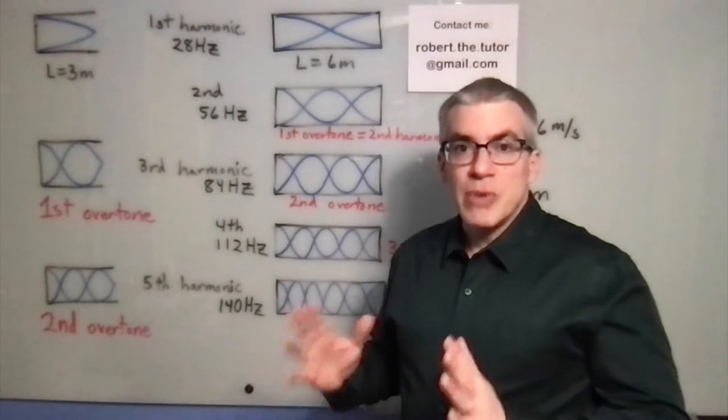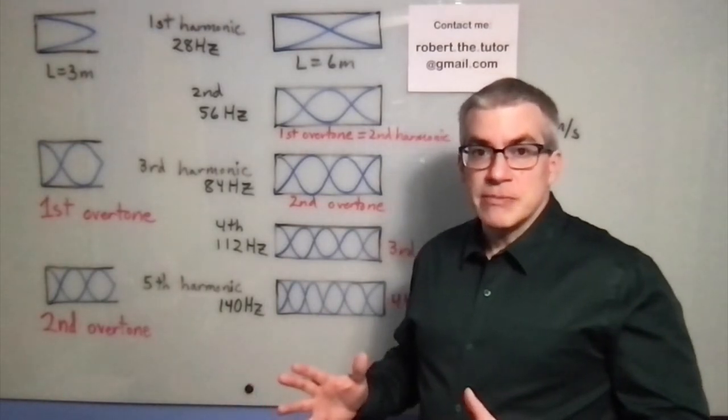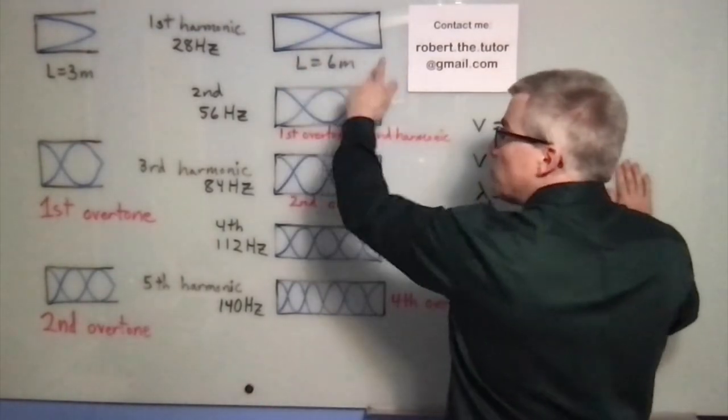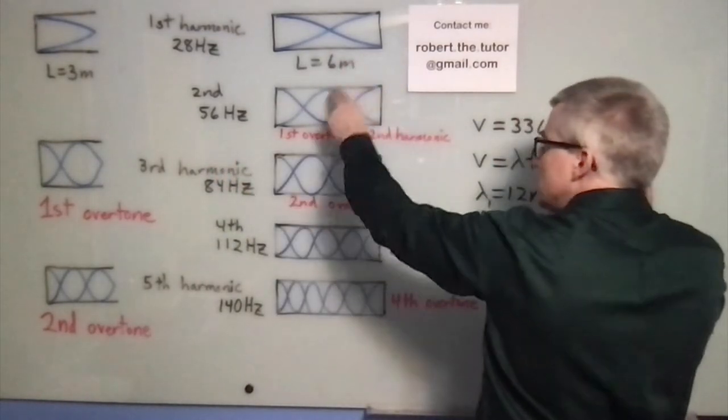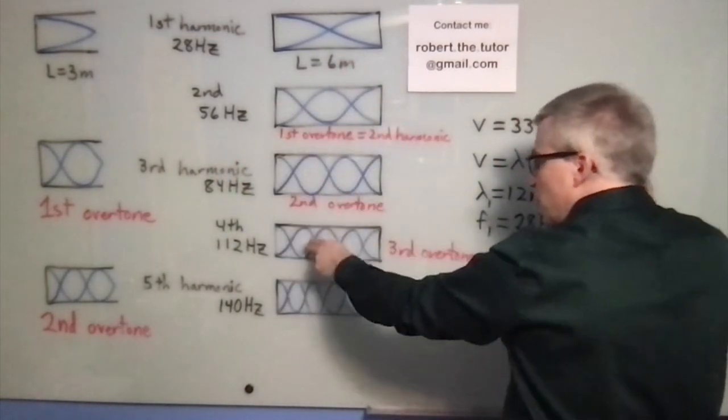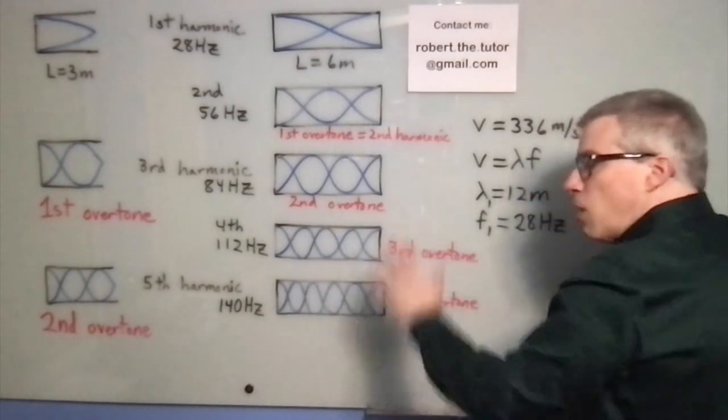So the harmonics are just multiples of the fundamental frequency. So a pipe that's symmetrical, closed at both ends or open at both ends, you could get the fundamental second harmonic, third harmonic, fourth harmonic, fifth harmonic, all of the multiples.